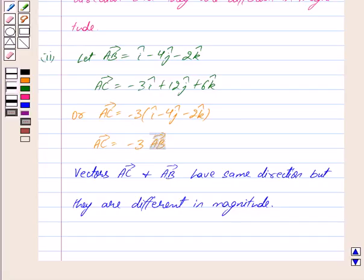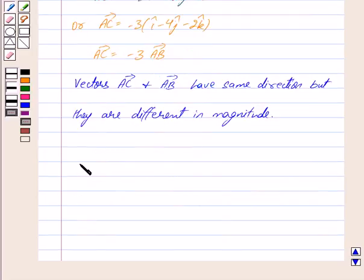Similarly, we can take infinite number of examples of two different vectors having same direction. Hence, we write our answer as an infinite number of possible answers.